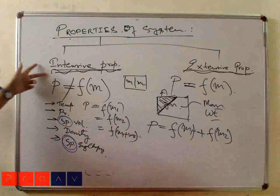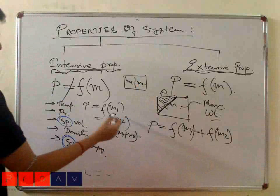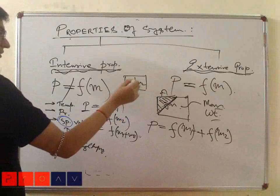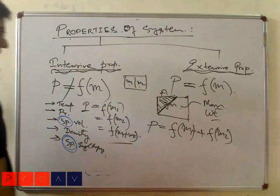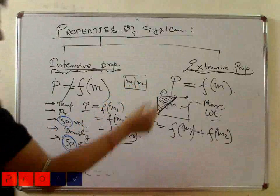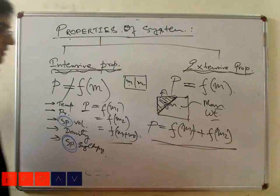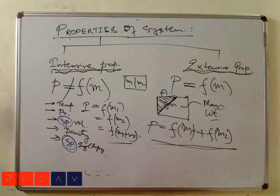For the case of intensive property, the property is the same function of M1, also of M2, and also of M1 plus M2. For extensive property, it is the addition: function of M1 plus function of M2.